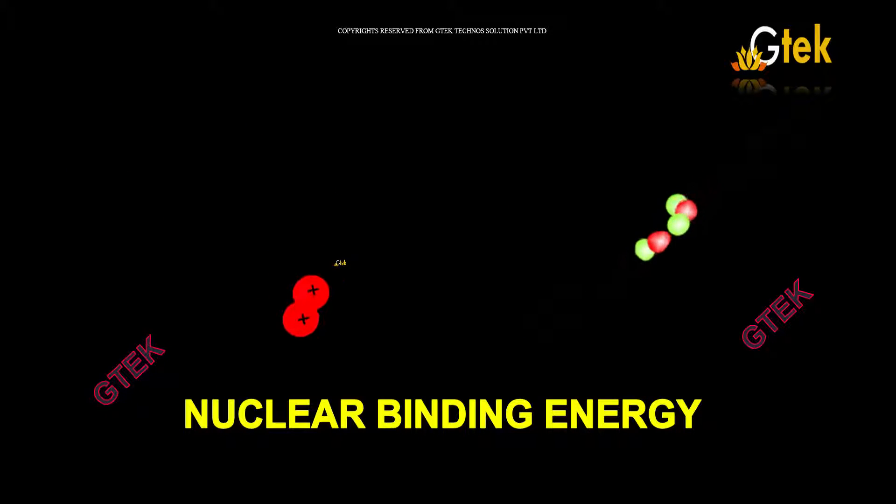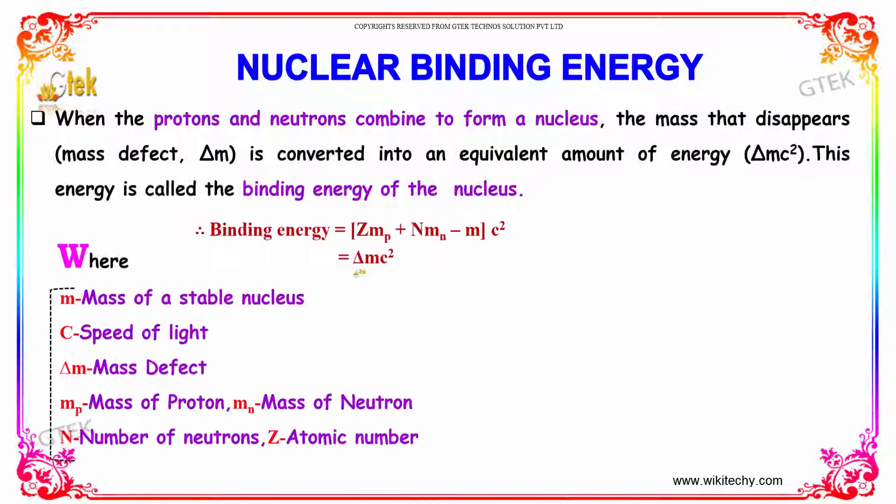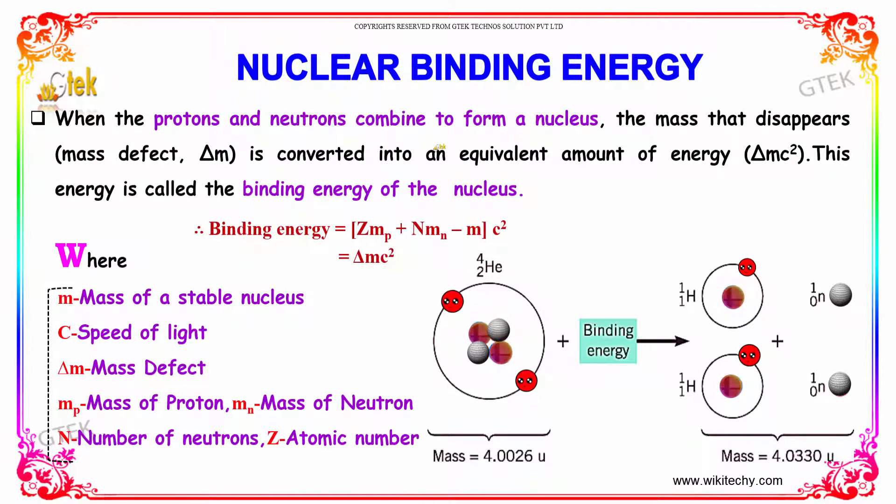Now we will look at nuclear binding energy. When protons and neutrons combine to form a nucleus, the mass that disappears is converted into an equivalent amount of energy, Δm·c². This energy is called the binding energy of the nucleus.